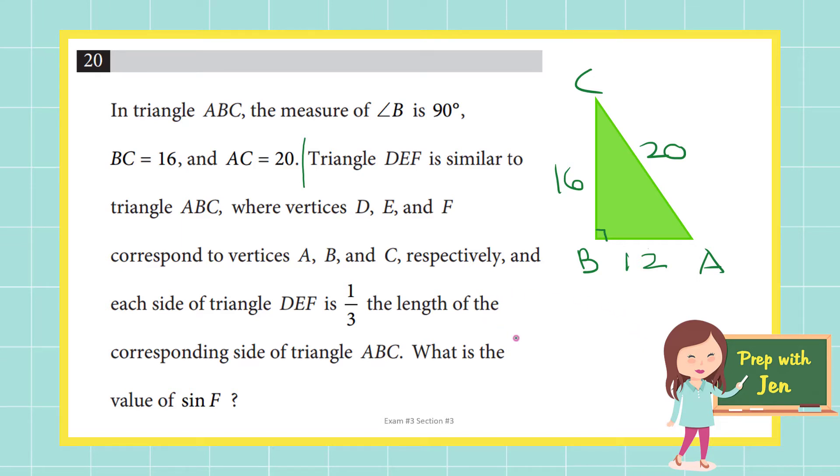Moving on to the other givens. Triangle DEF is similar to triangle ABC. Similar is a trigger word, a keyword, so underline that where vertices D, E, and F correspond to vertices A, B, and C respectively, and each side of triangle DEF is one-third the length of the corresponding side of triangle ABC. What is the value of sine F? I always like to circle my question so I know I'm not solving for the wrong thing. I'm looking for sine F. Of course you can draw yourself another triangle DEF and divide all the sides of ABC by three and then solve for sine of F that way. But I think there's an easier way I'm going to show you.